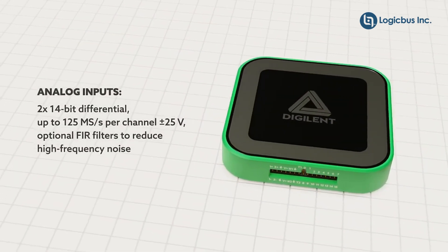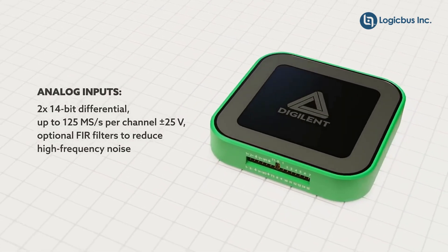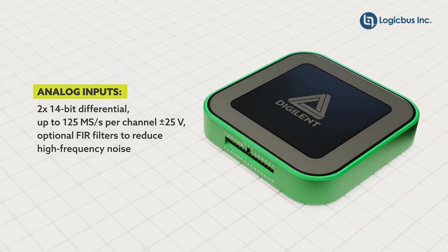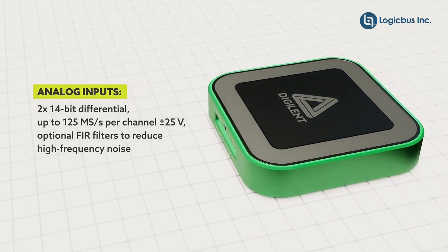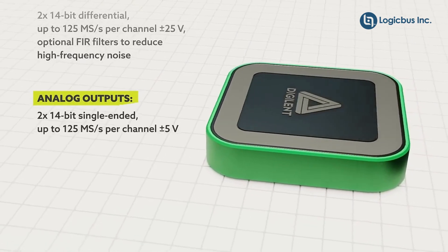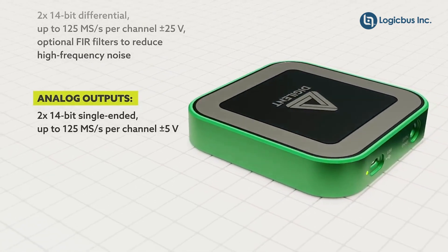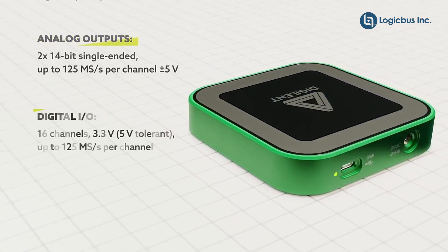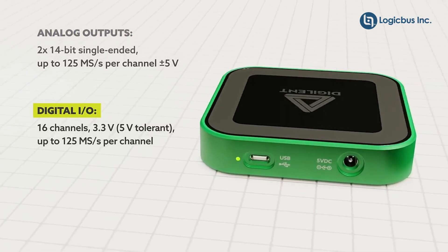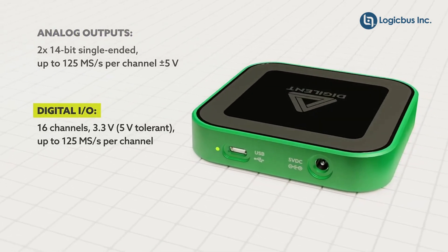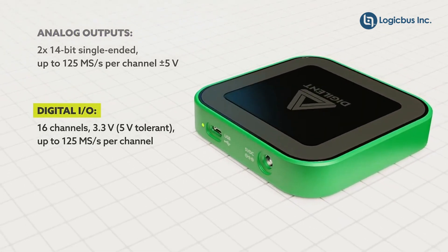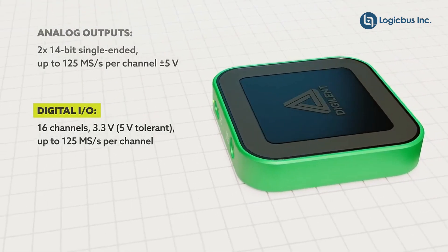The compact multi-function test and measurement device features two 14-bit differential analog inputs with optional FIR filters, two 14-bit single-ended analog outputs, and 16 3.3-volt digital IOs that are 5-volt tolerant, all of which can be sampled at up to 125 mega samples per second.